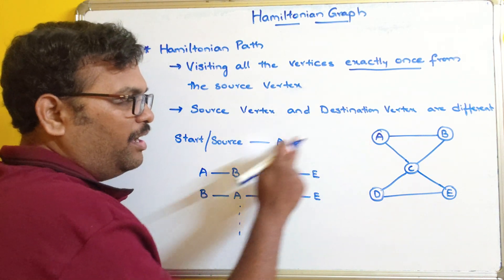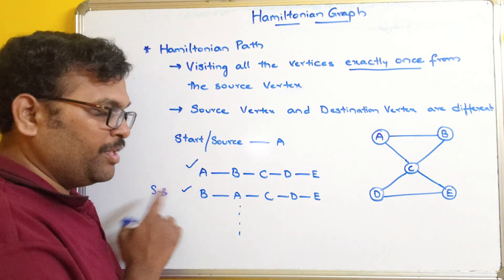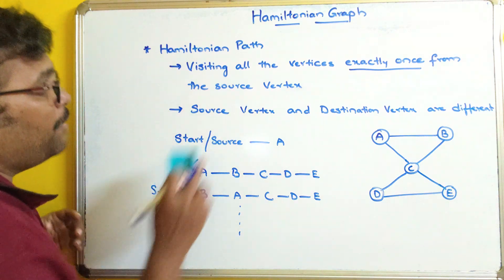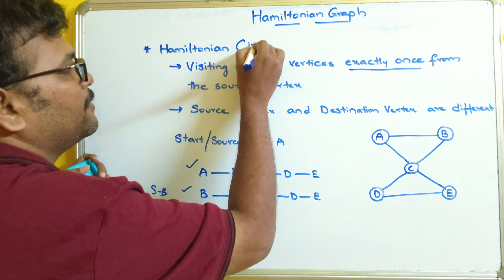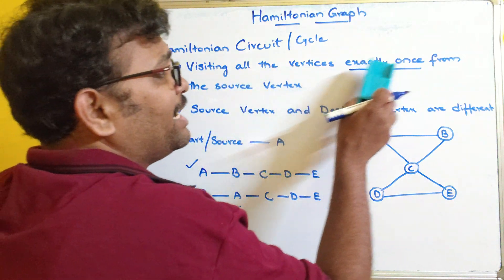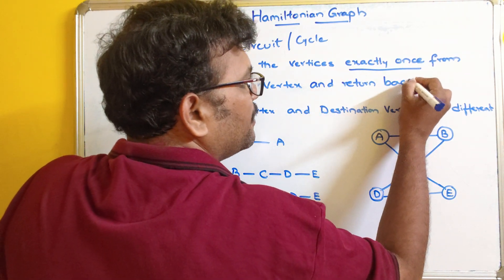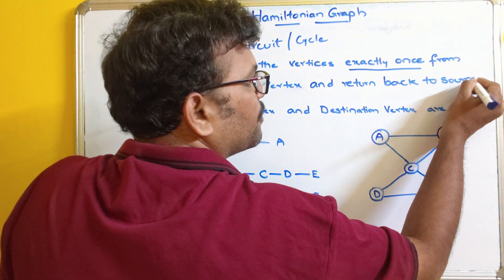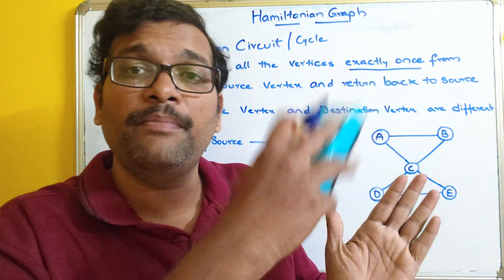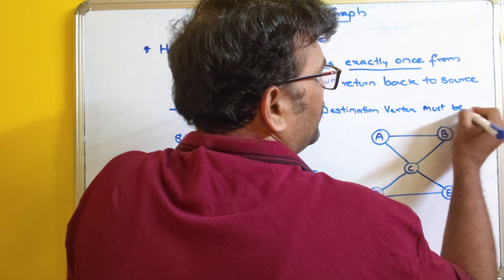Here you can see we are starting from A or B — in one case the source vertex is A, in the other it is B, visiting all vertices exactly once. Now, coming to the Hamiltonian circuit or cycle — you can call it either. It means visiting all the vertices exactly once from the source vertex and returning back to the source. The source vertex and destination vertex must be the same.